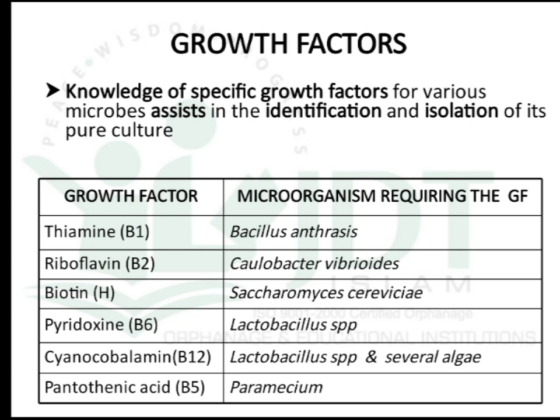This table shows some growth factors and the microorganisms requiring them. For example, Bacillus anthracis requires thiamine — adding thiamine to nutrient media helps isolate and culture Bacillus anthracis. Similarly, riboflavin is required by Caulobacter vibrioides, biotin by Saccharomyces cerevisiae, pyridoxine by Lactobacillus species, cyanocobalamin by Lactobacillus species and several algae, and pantothenic acid by Paramecia.